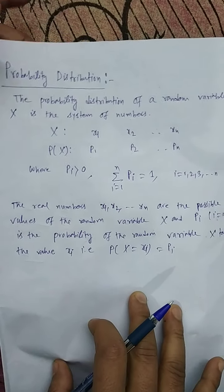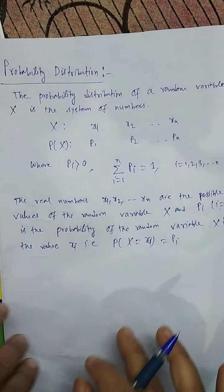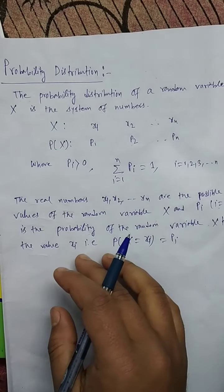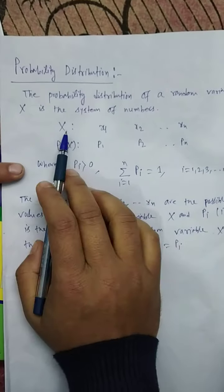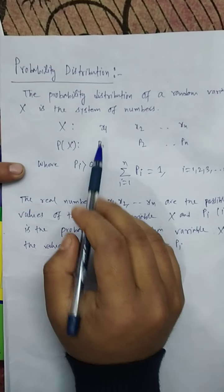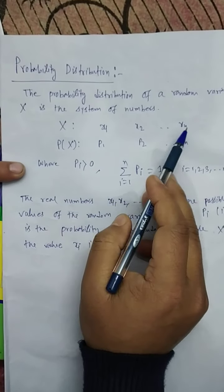What's up students, today I am going to discuss probability distribution. The probability distribution of a random variable X is the system of numbers X, P(X). So we have X1, P1, X2, P2, ..., Xn, Pn.